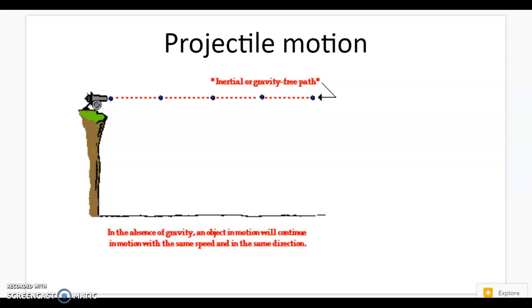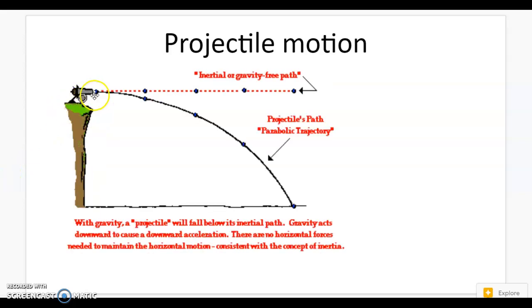Hey there physics peeps. We're going to take a look at projectile motion and how to determine the speed of a projectile. When we talk about projectiles, the key thing to remember is that the path for a projectile, even though it follows a parabola, really follows a combination of an object going in the x-direction and the y-direction.